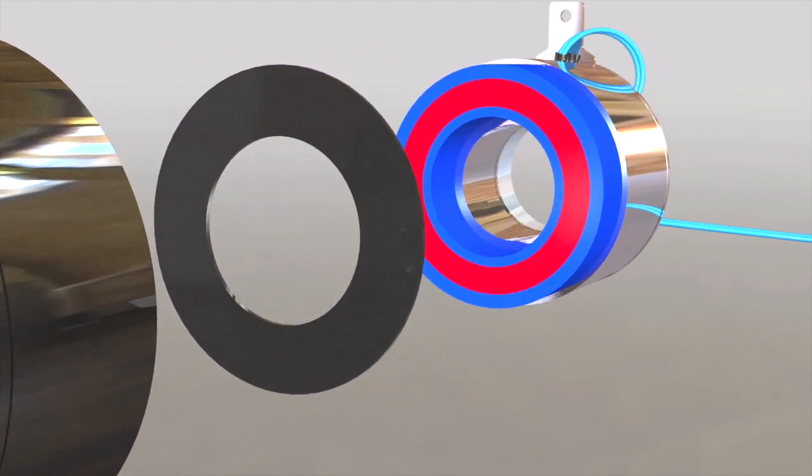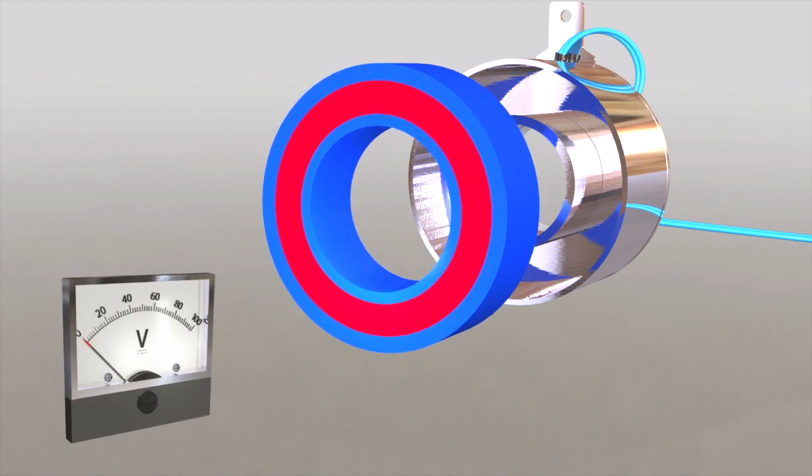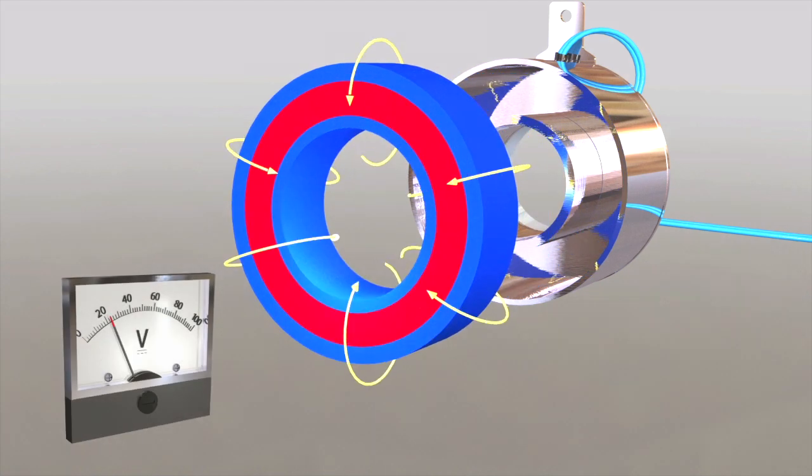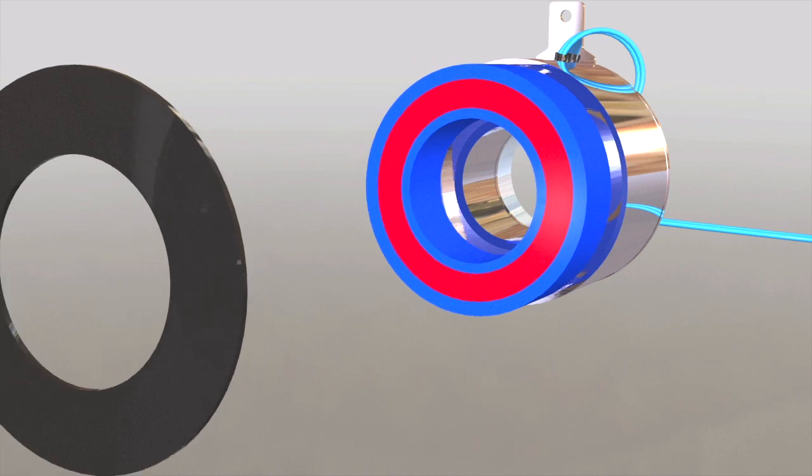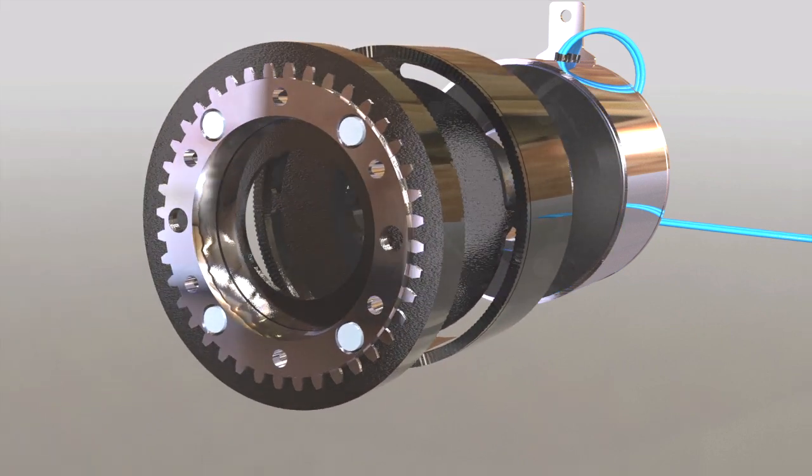Electromagnetic tooth clutches operate via electric actuation, but transmit torque mechanically. When voltage current is applied to the clutch coil, the coil becomes an electromagnet and produces magnetic lines of flux.